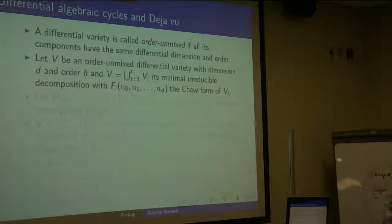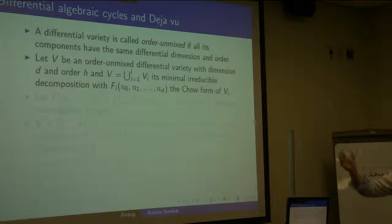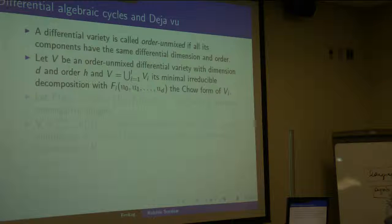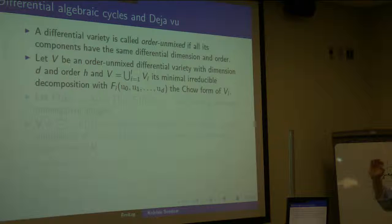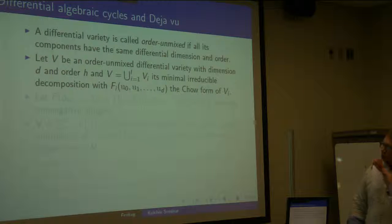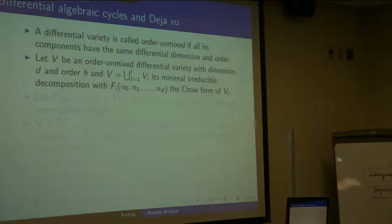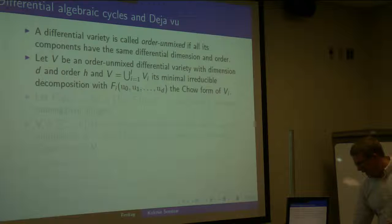Let V be an order unmixed differential variety with dimension d and order h. Take its minimal irreducible decomposition, and let F_i be the differential Chow form of V_i, where i ranges from 1 to l — those are the components.